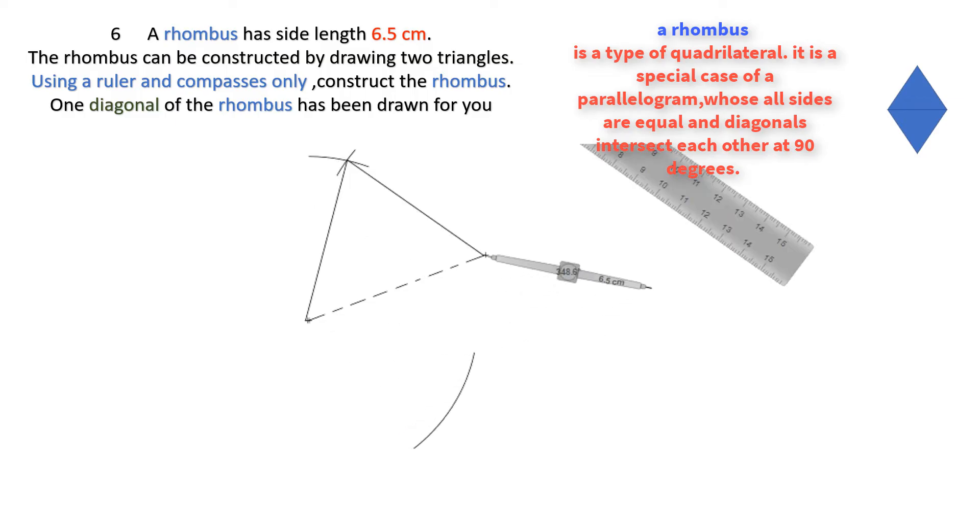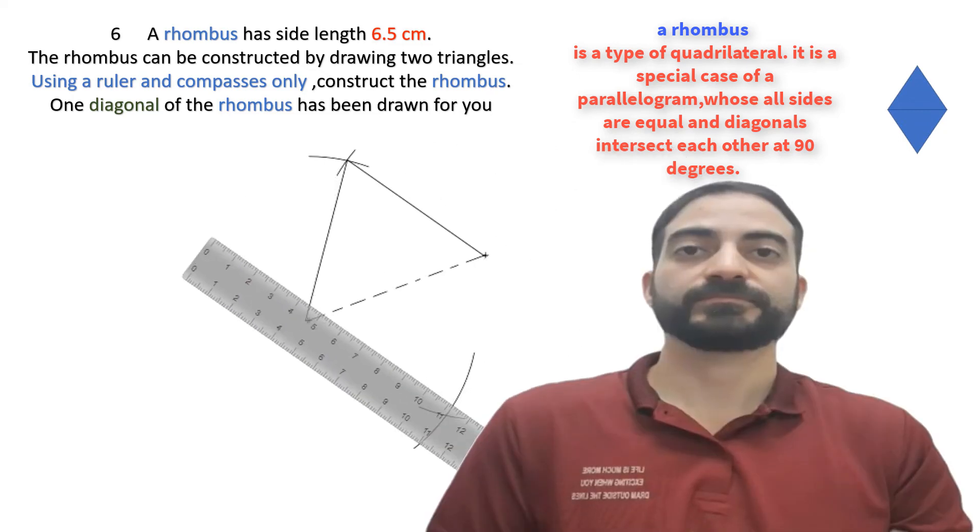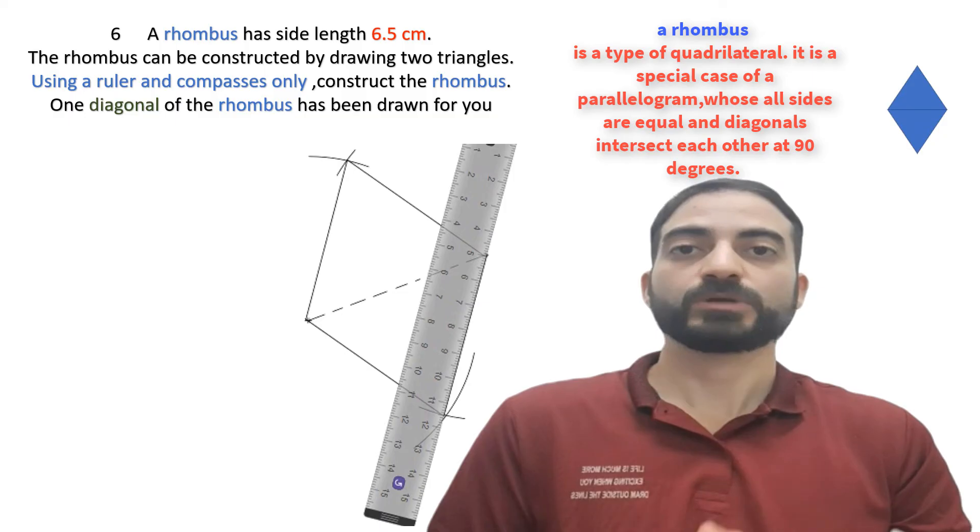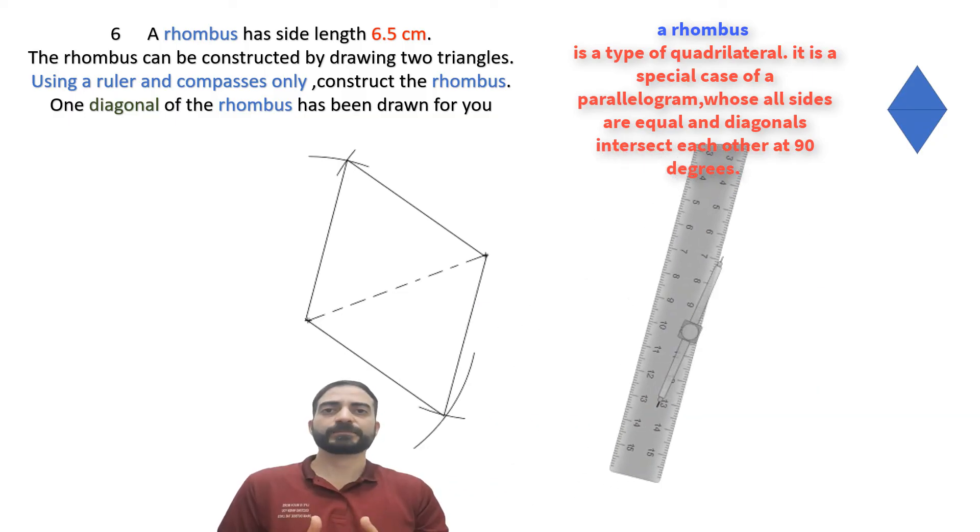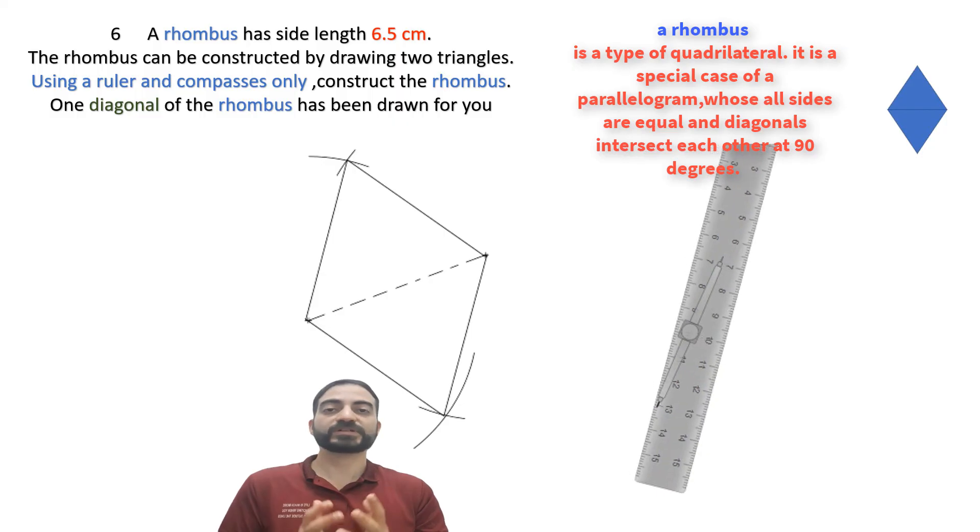Now we do the same thing but from the other side. In this way, we have drawn the rhombus which has a side length of 6.5 cm.